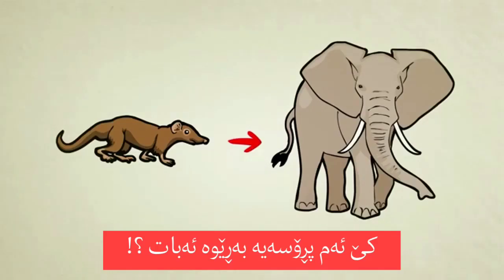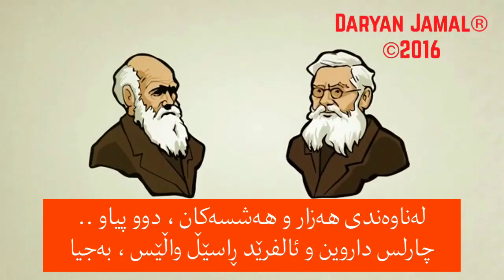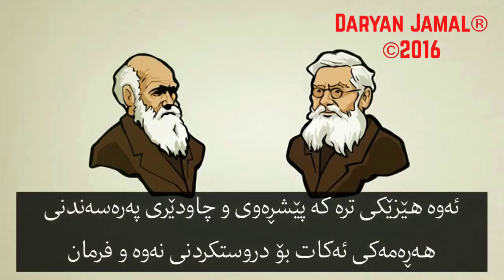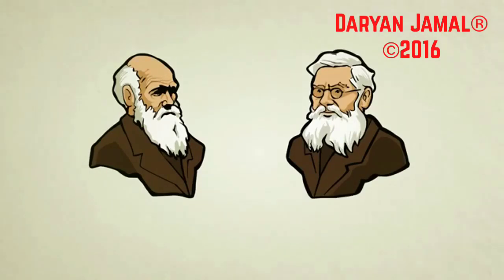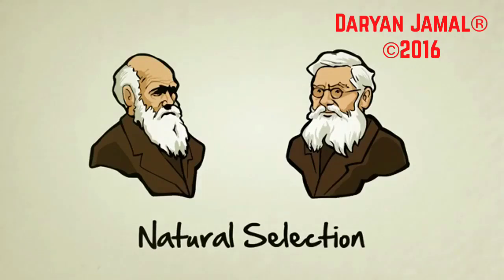In the mid-1800s, two men — Charles Darwin and Alfred Russell Wallace — independently discovered that a breeder is not necessarily needed. There is another force capable of guiding random evolution to produce order and complex function. They called it natural selection, which happens to be the entire topic of our next video.